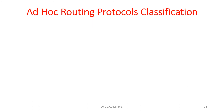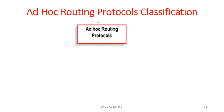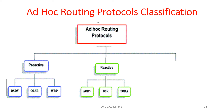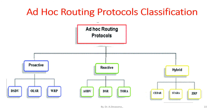Ad hoc routing protocols classification: ad hoc routing protocols are classified into three types. The first is proactive routing protocol, which includes DSDV, OLSR, and WRP routing protocols. The second is reactive routing protocol, which includes AODV and DSR routing protocols, and the TORA routing protocol. The third is hybrid routing protocol, which includes CEDAR, STARA, and ZRP.